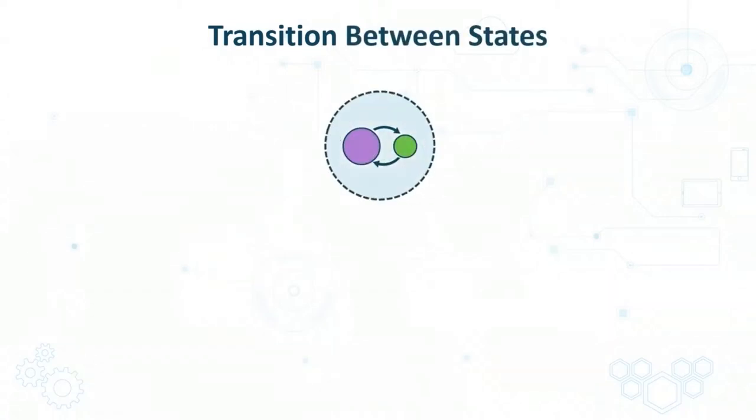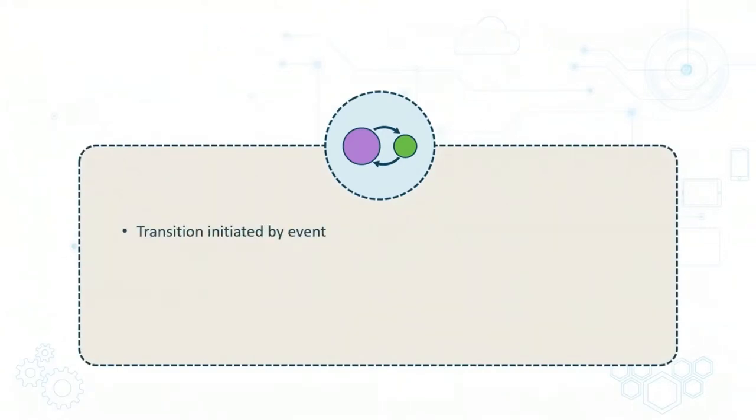In this video we'll look at state transition testing. In state transition testing, a transition between states gets initiated by some type of event. The event results in the transition between states.